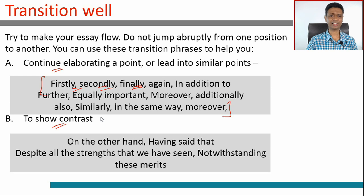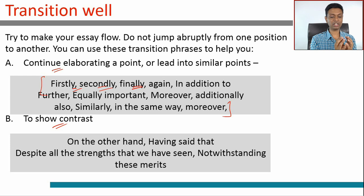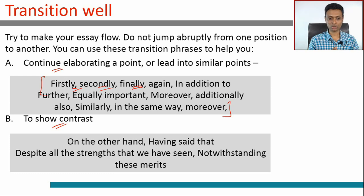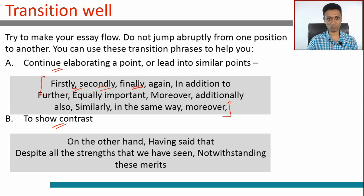How do you show contrast? On the other hand, having said that, despite this, in spite of this, notwithstanding that — those establish contrast. Sometimes when you say these are the points I'm speaking in favor of, you might want to counter whatever is going to come against that. Having said that, these points also need to be considered. Notwithstanding these objections, the merits of the original case hold good. So you can establish contrast and conclude very well. If you're saying pros, cons, and then concluding, then this framework is very useful. These phrases help you make the essay flow and not be jerky from one instance to another.